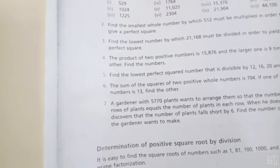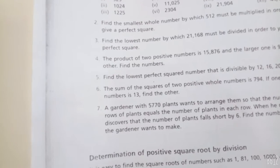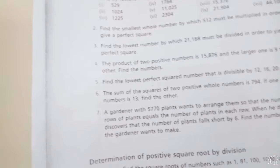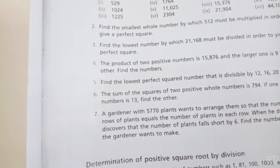The sum of the squares of two positive whole numbers is 794. If one of the number is 13, find the other.